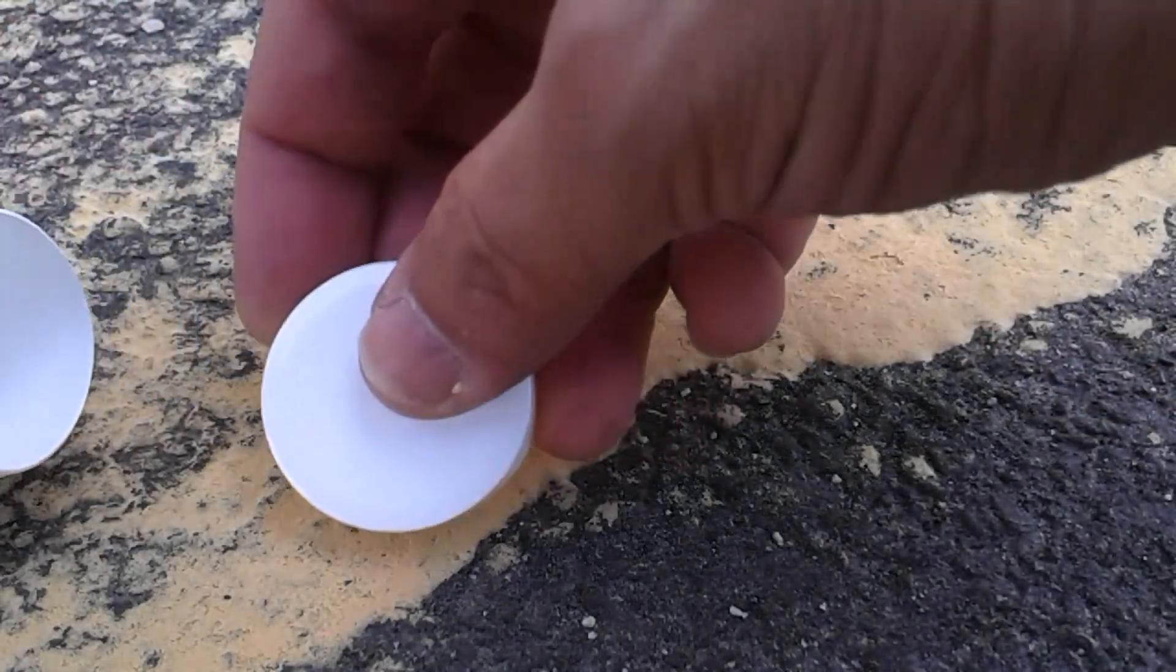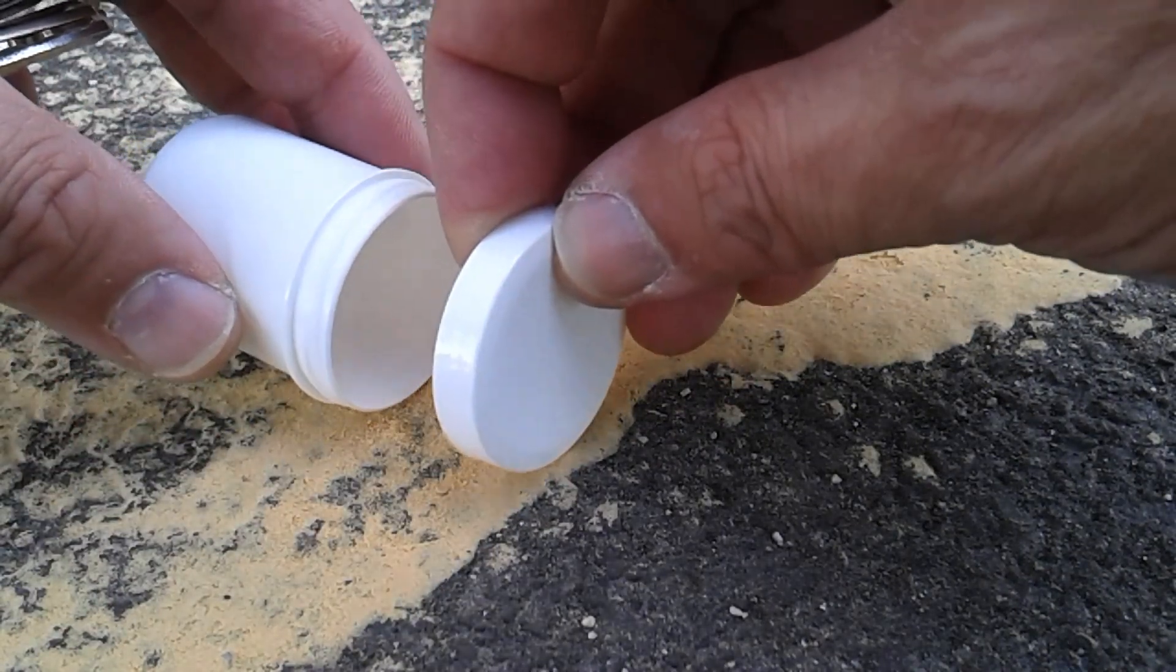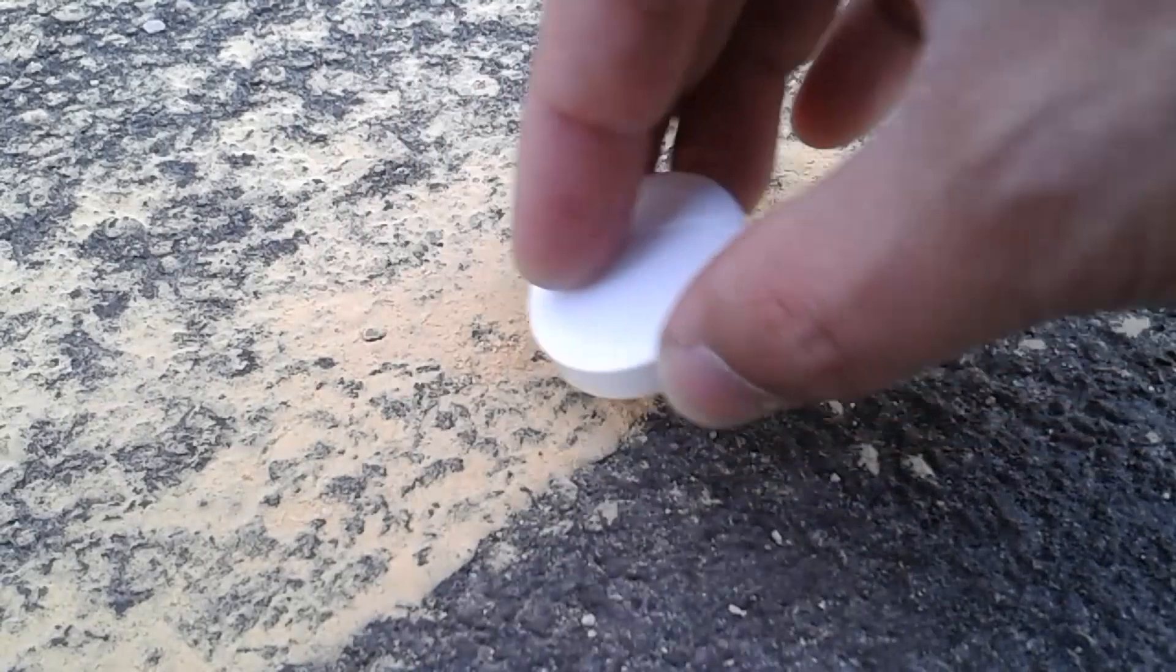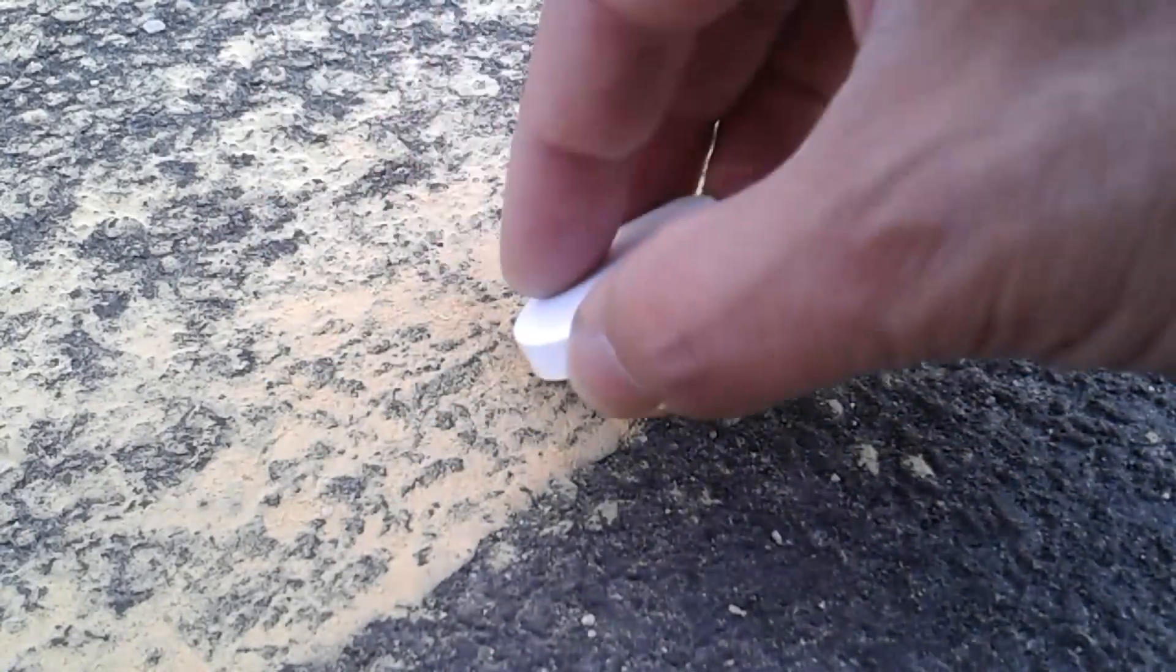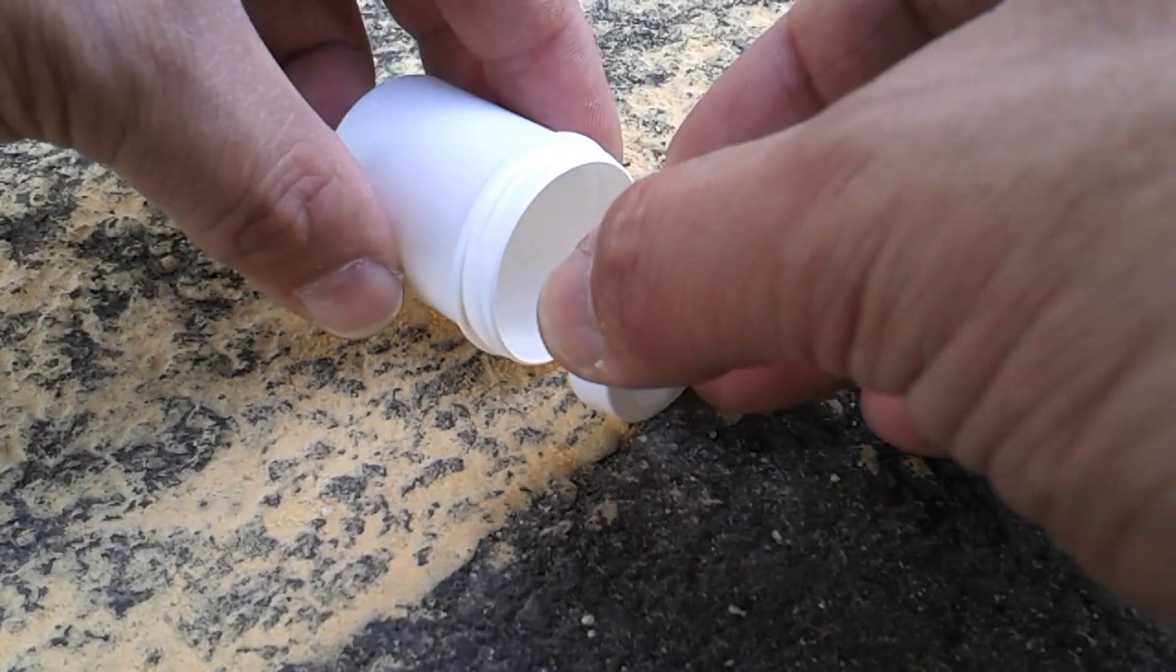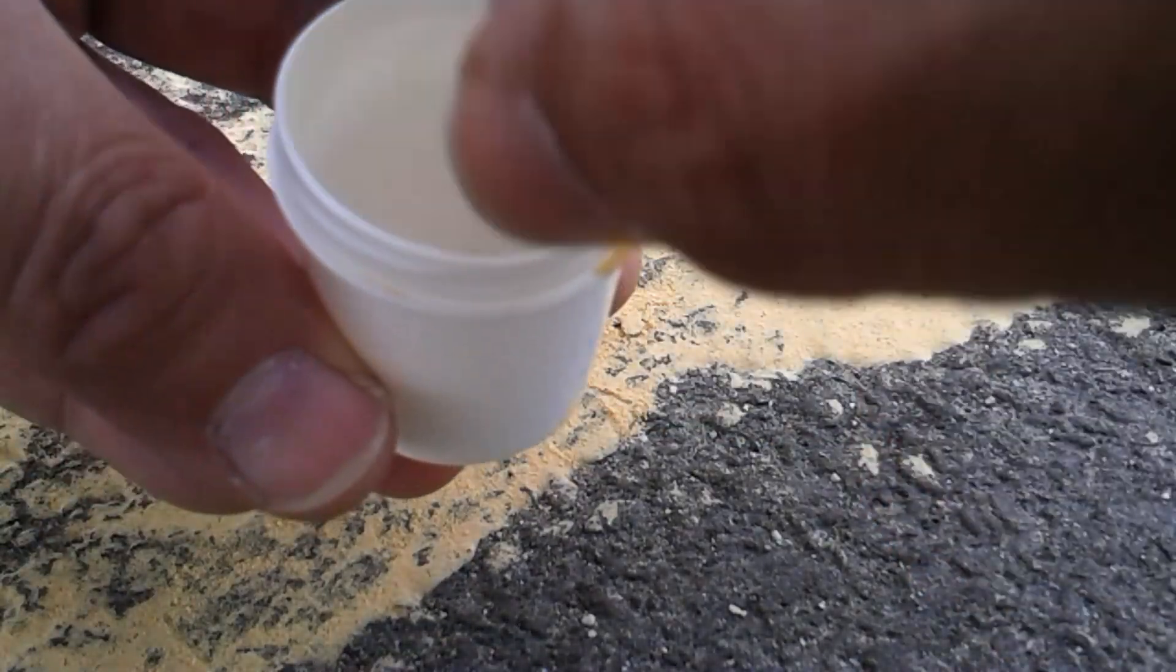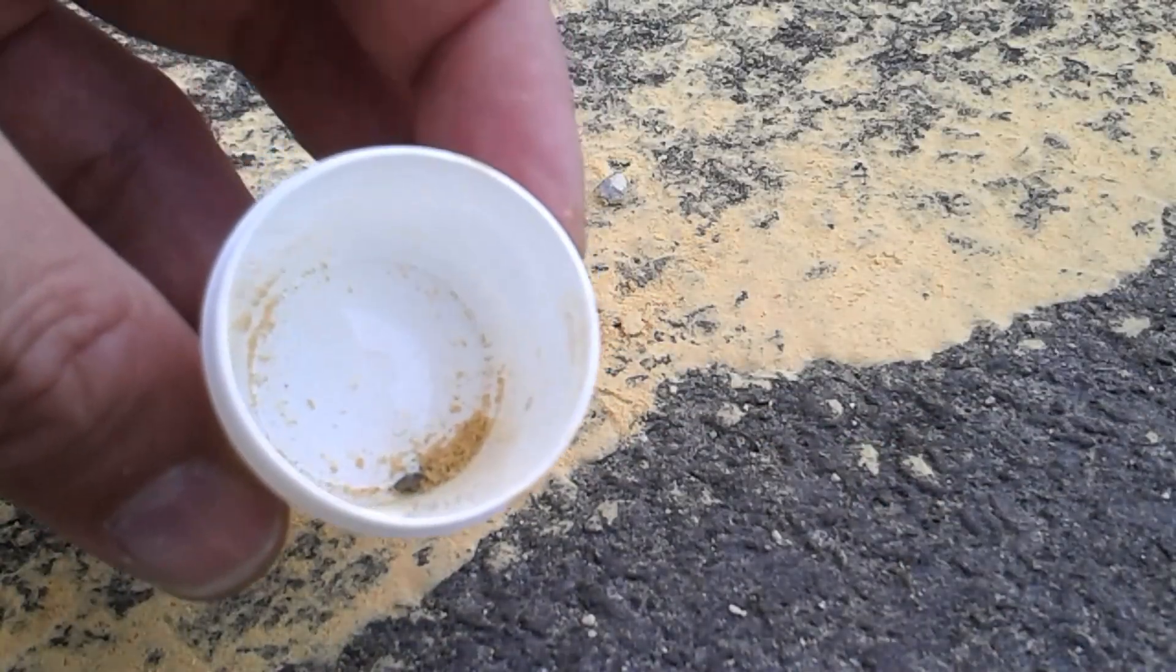Unfortunately I forgot my tools at home so I have to scratch off some material just like this. The pollen were difficult to separate from the ground because they were sticking together. When the rainwater evaporated, it caused the pollen to stick together, so some material from the ground was also collected, but that's okay.